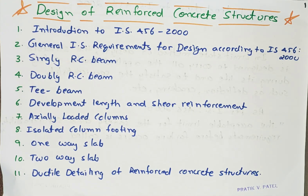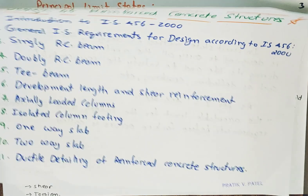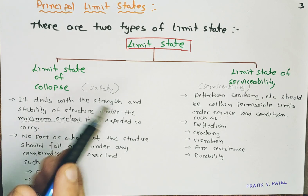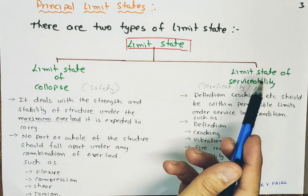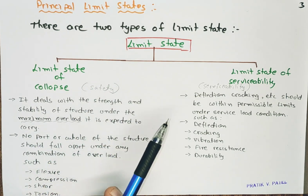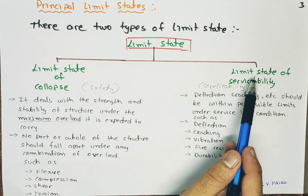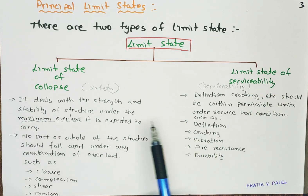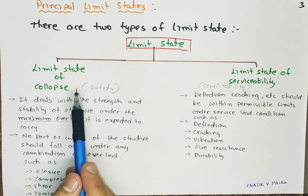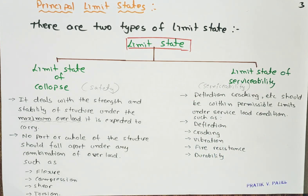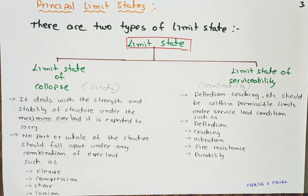Hello friends, welcome to Part 3 of the design of reinforced concrete structures. Previously we started with the introduction to Indian Standard code IS 456-2000 and we understood the types of limit states — that is, limit state of collapse and limit state of serviceability. These are the basic methods by which our structures are designed. Let us continue.